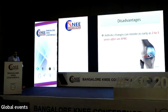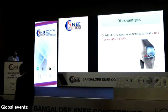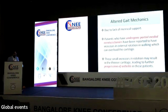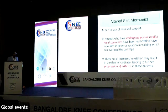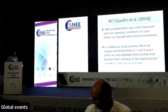The disadvantages actually outweigh the advantages. Arthritic changes can initiate as early as two to five years after APM. There is also an altered gait mechanism due to lack of meniscal support. Patients who have undergone partial meniscectomy, especially medial meniscectomy, have been reported to have increased external rotation while walking, which can overload the cartilage. This small increase in rotation over time may result in increased progression of arthritis.